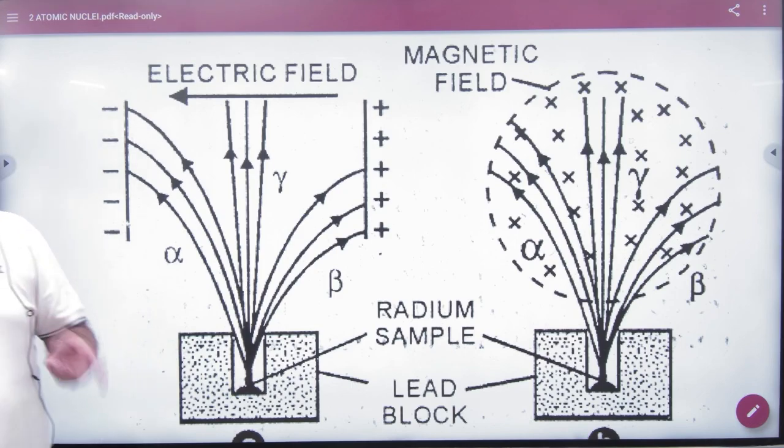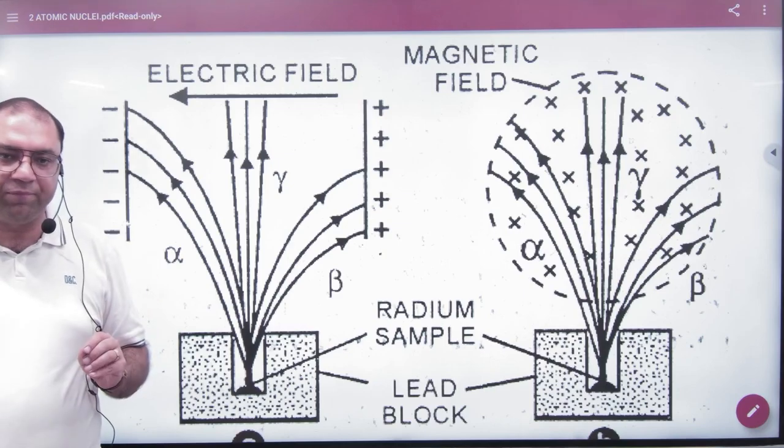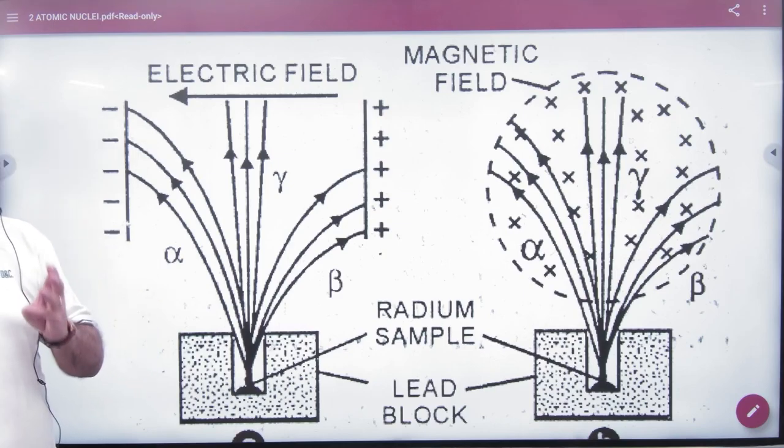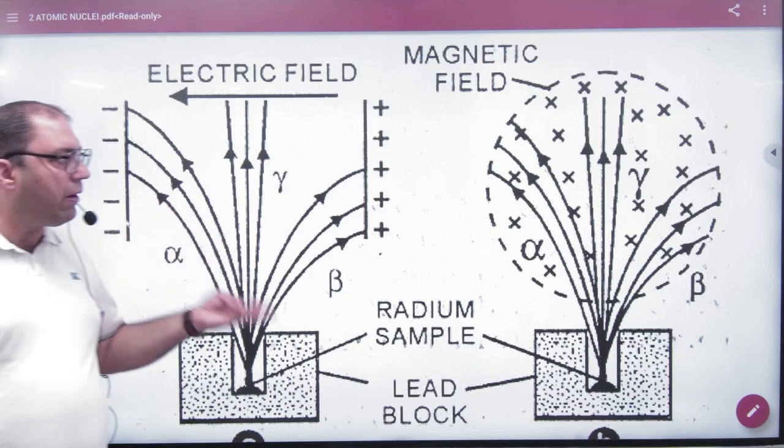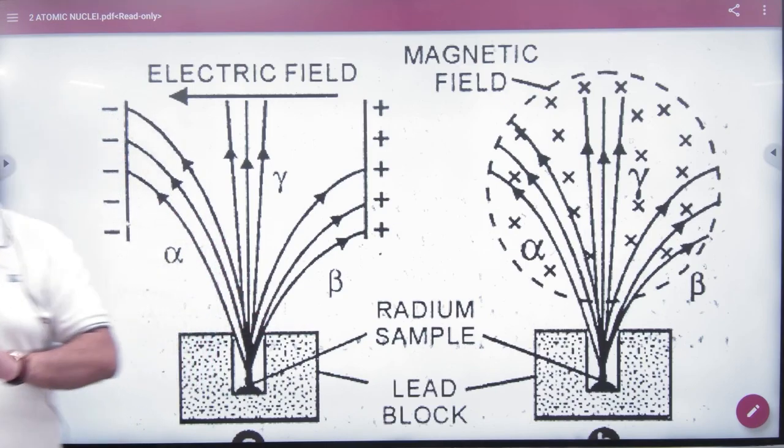When radioactivity happens and alpha and beta particles come out, they are affected by magnetic fields. Gamma particles cannot be affected by magnetic fields.